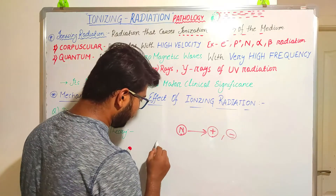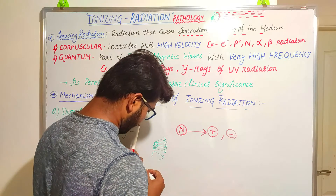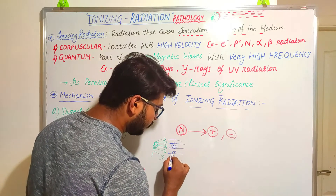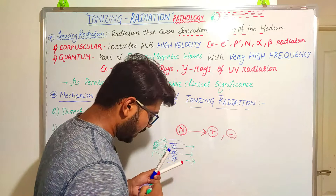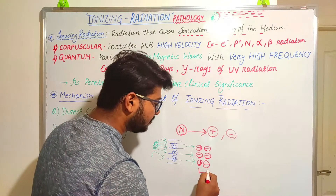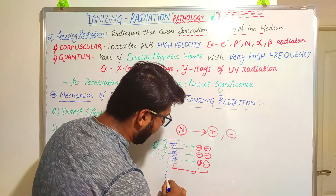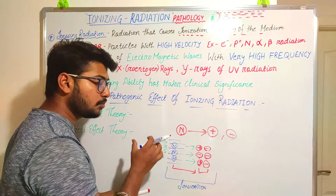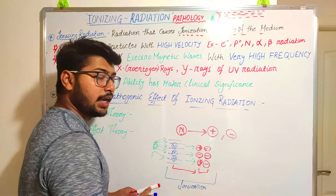For example, this is a source radiating rays. The rays pass through a medium where the particles were previously neutrally charged, but after the radiation ionizes these particles, they gain a charge — either positive or negative — changing their neutrality to charged ones. This condition is called ionization.